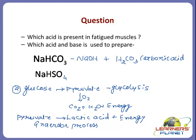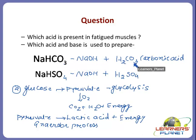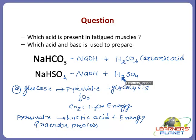Now for NaHSO4 — since Na is present, the base would be NaOH. And since HSO4 is sodium bisulphate, the acid here would be H2SO4. So, the acid and base present in sodium bicarbonate are NaOH and carbonic acid. And the acid and base present in sodium bisulphate are sulfuric acid and sodium hydroxide. You can identify the acid and base by looking at the formula of the compound — it is a salt.